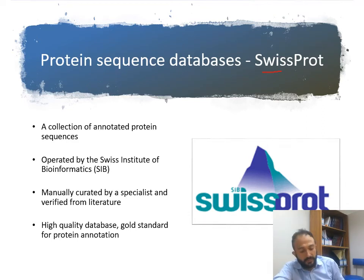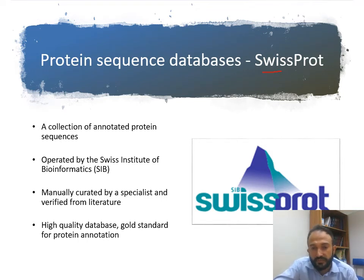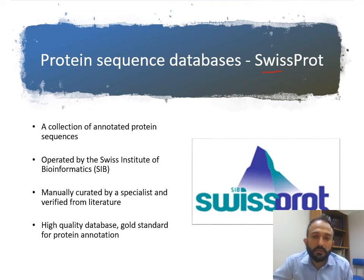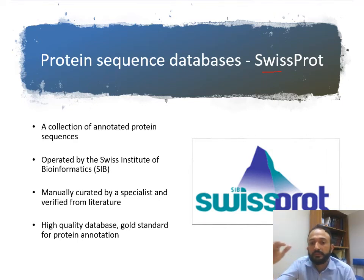There are two types of curation: automatic curation and manual curation. Automatic curation means information is automatically created using a computational pipeline. Manual curation means the automatically created information is then further verified by specialists in that particular field and checked against literature to confirm it is correct. This two-layered validation makes it a high-quality database.